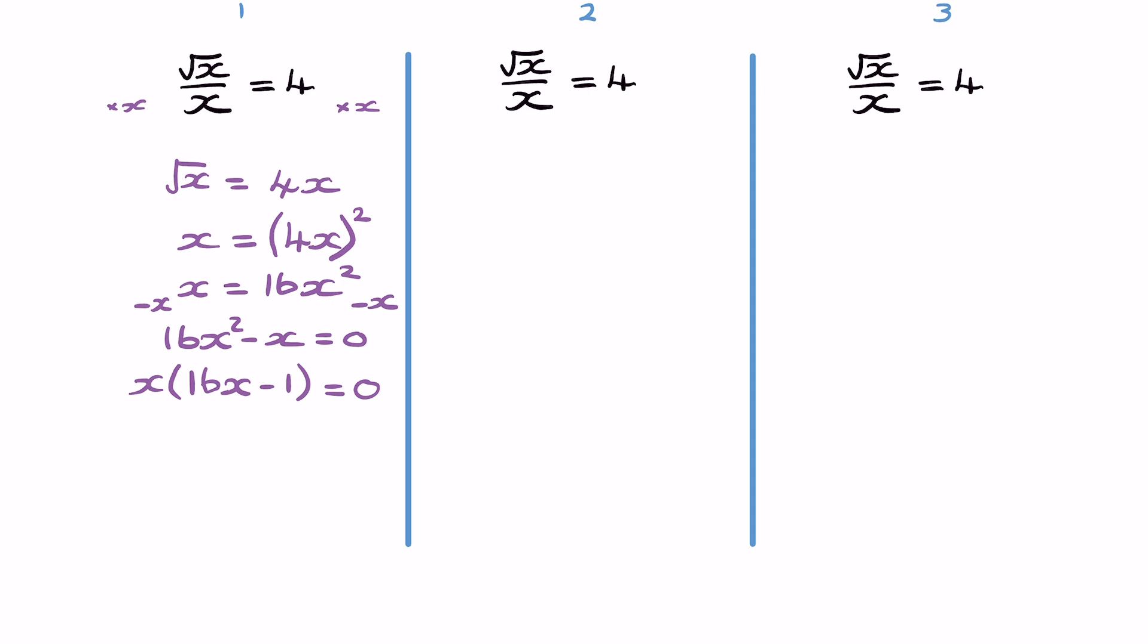So from there we can see we either have x equals 0. Well, if we go back to our original equation, we have root x over x. Well, x could not be 0 because if we were dividing by 0, it would actually be undefined. So x cannot be 0.